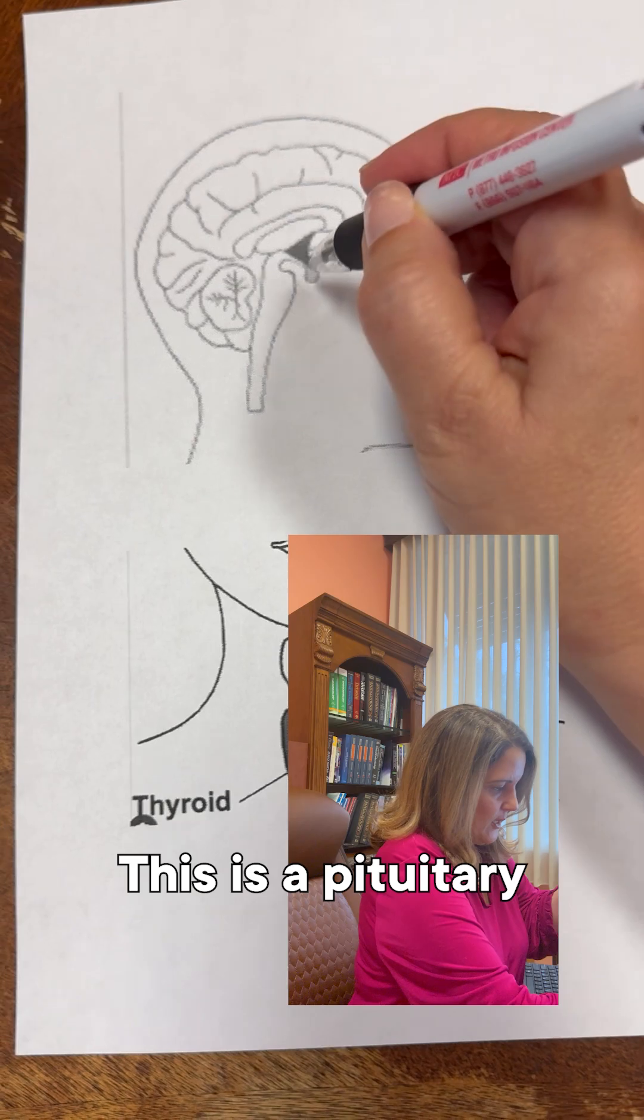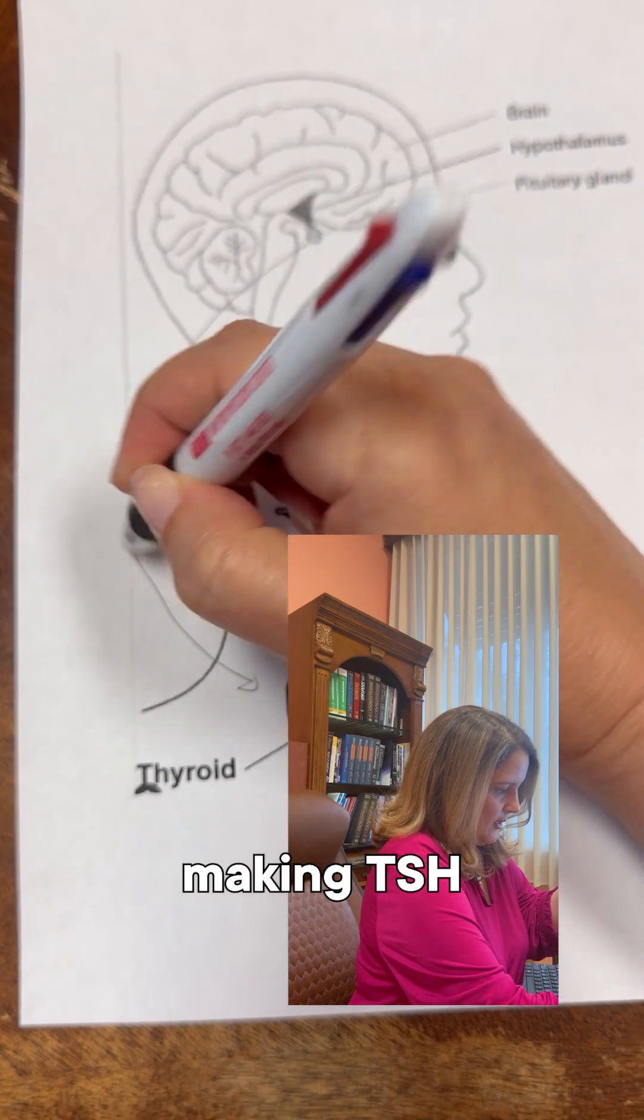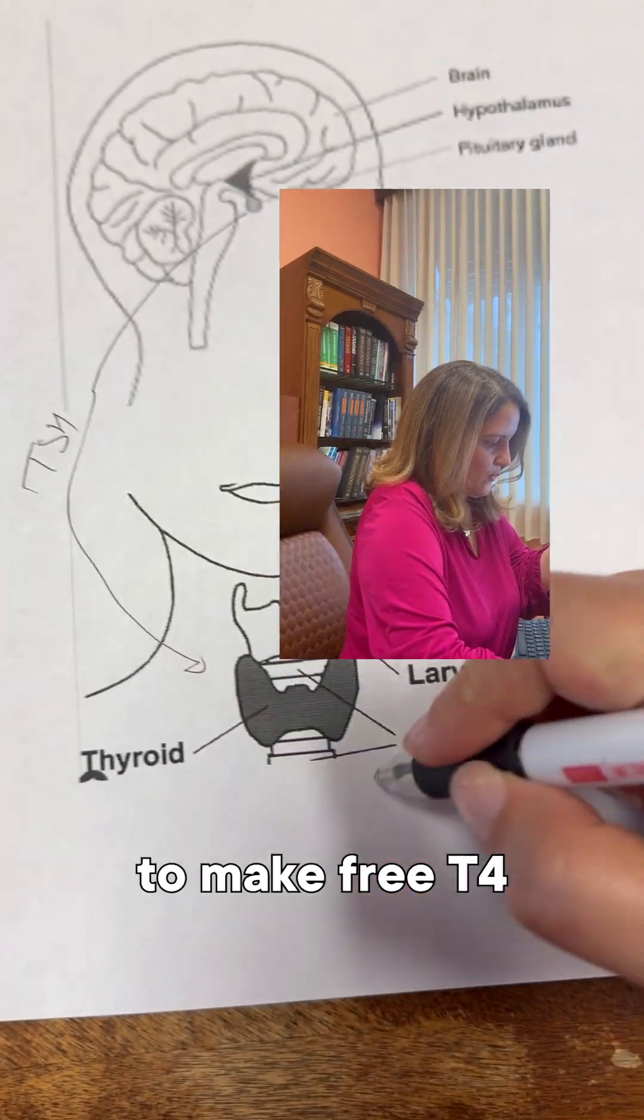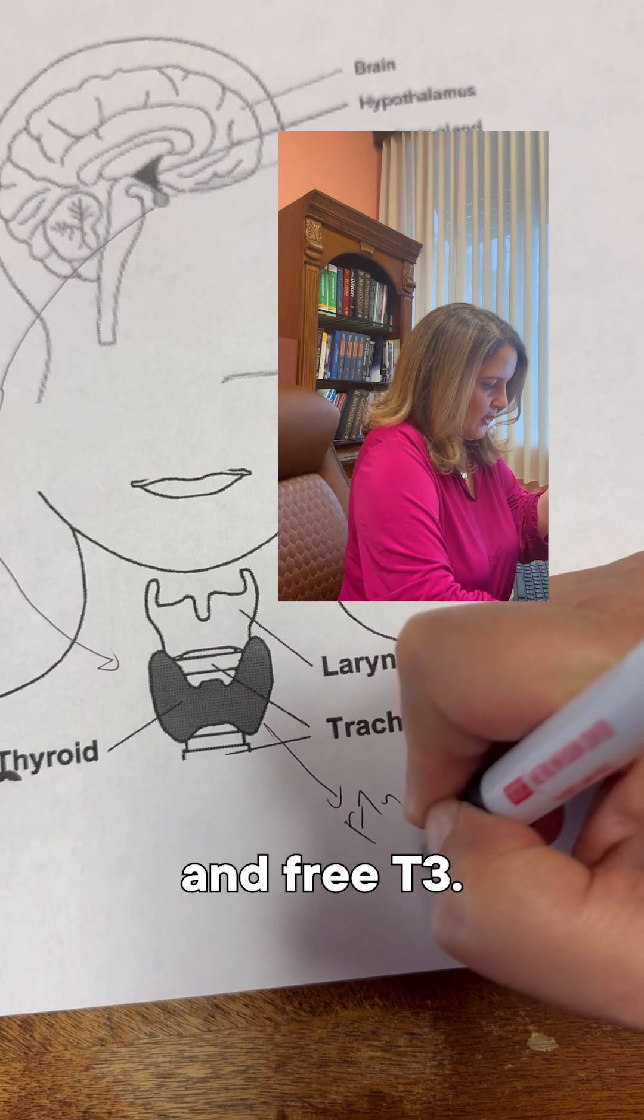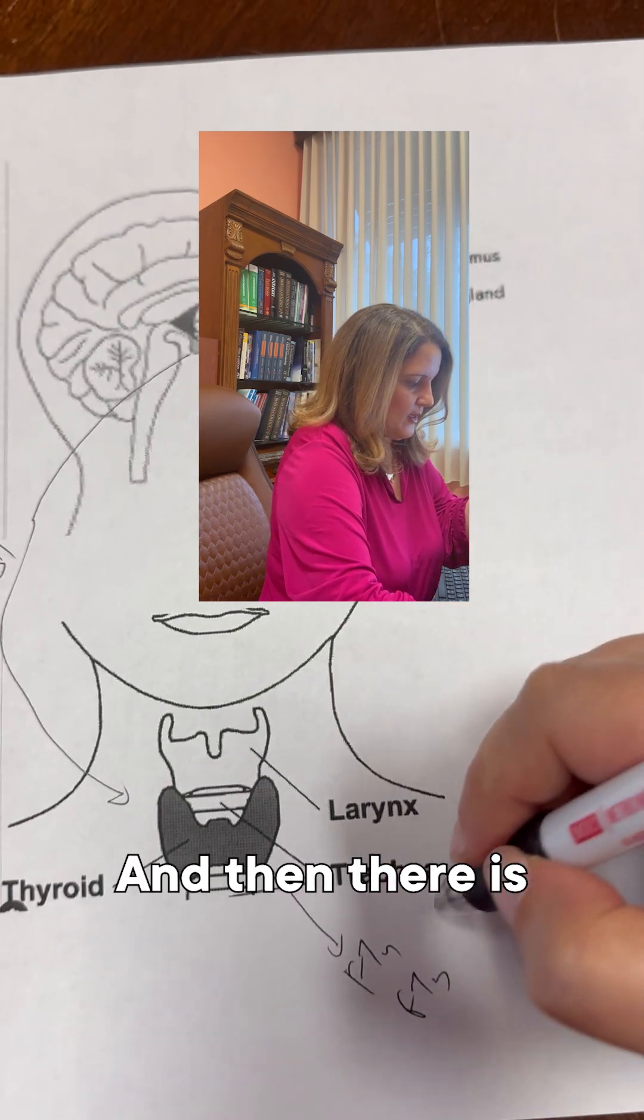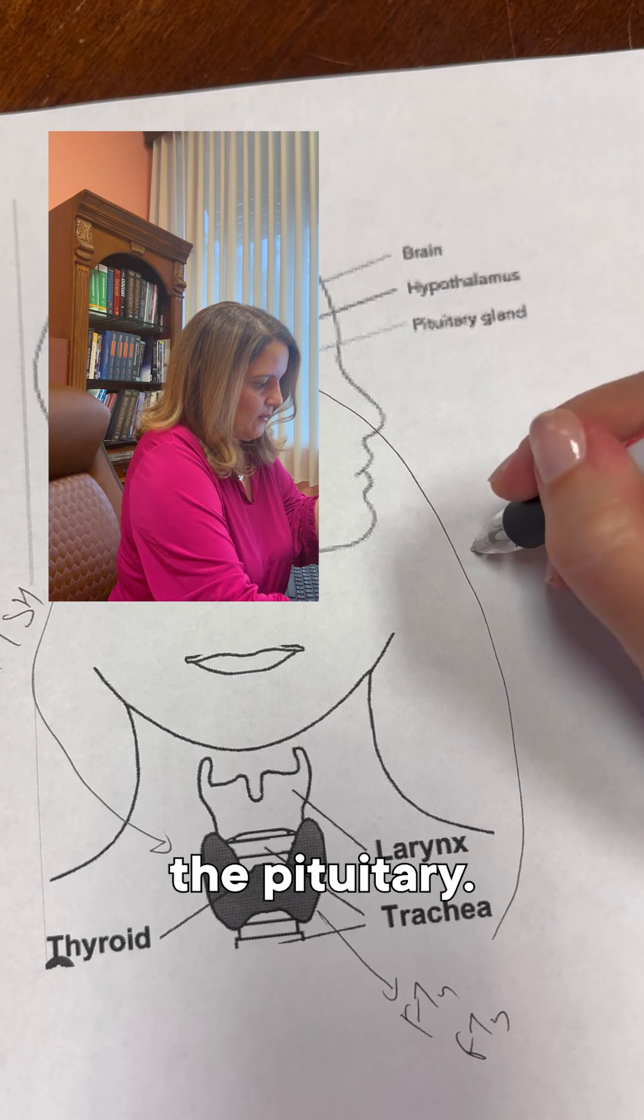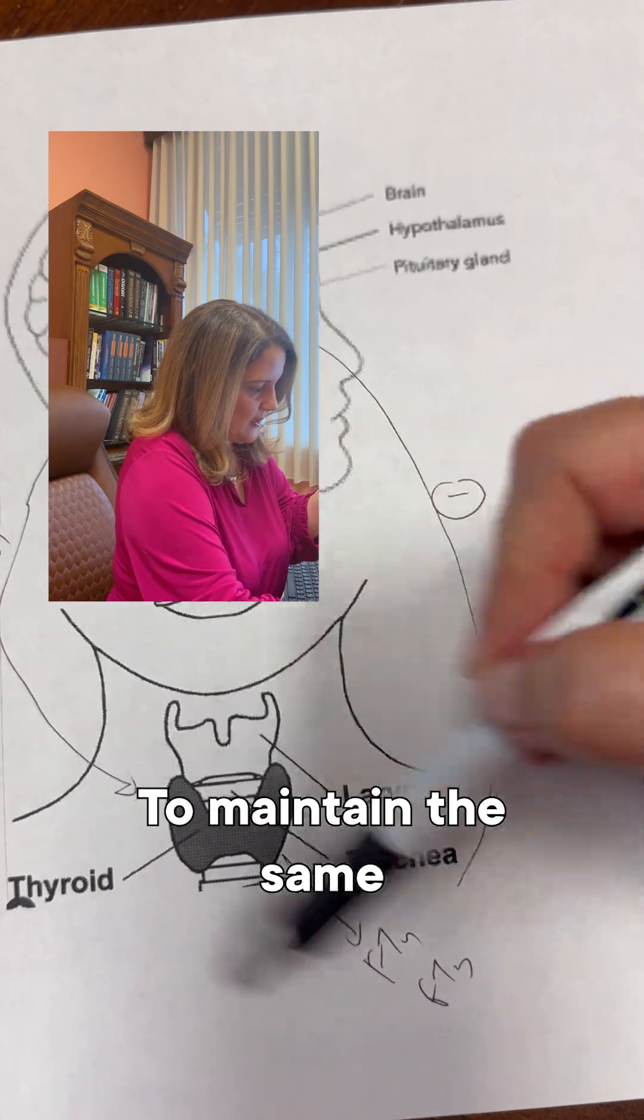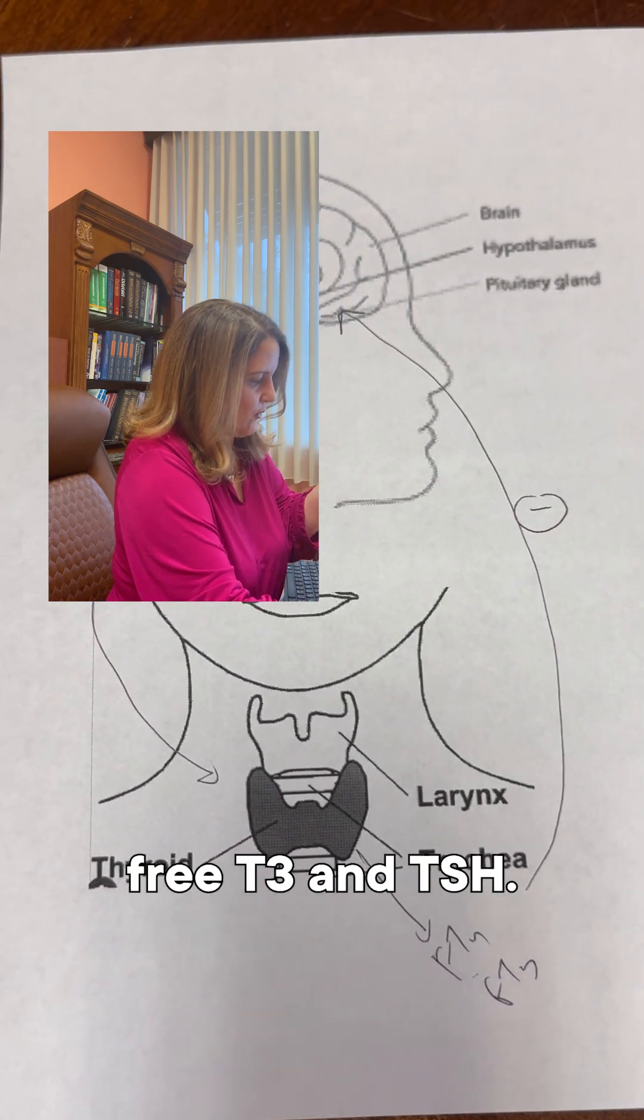Let's review one more time. The pituitary makes TSH to stimulate the thyroid to make free T4 and free T3. And then there is negative feedback to the pituitary to maintain the same amount of free T4, free T3, and TSH.